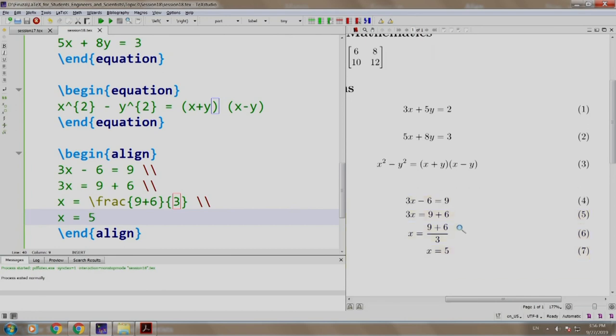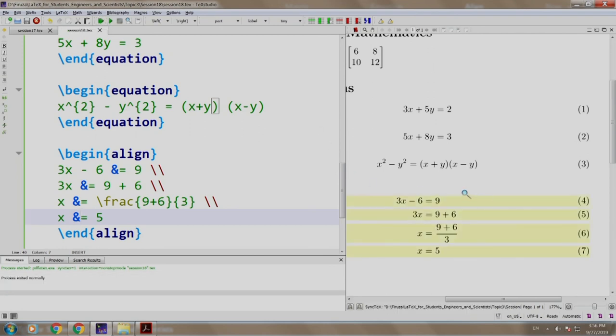Notice that the equation is centered. Since we are solving it we would like to align it with respect to the equal to sign. So we just write ampersand equal to. Ampersand equal to will align the equations keeping the equal to sign in mind. Let us build and run. As you can see the equation is aligned with respect to the equal to sign.